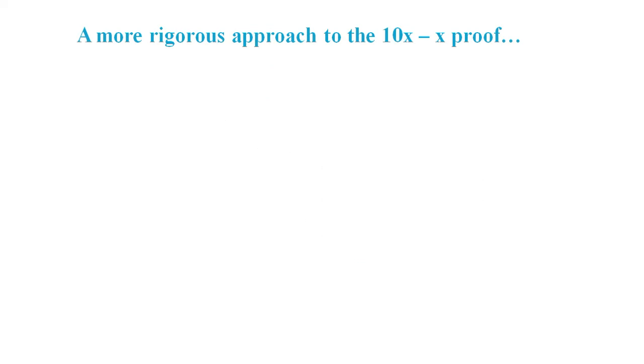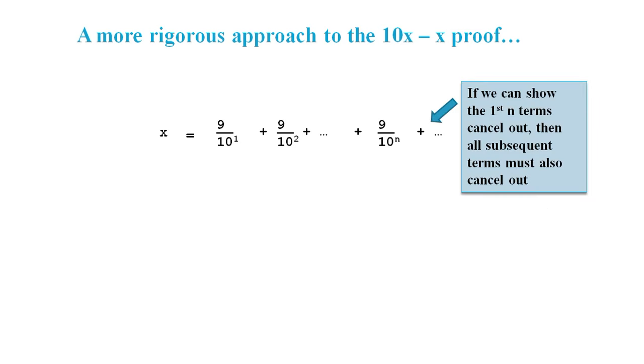And so let's do a more rigorous approach to this proof. We start off by expressing 0.9 recurring as a series up to the nth term. We are assuming that there are an endless number of terms after the nth term—infinitely many if you prefer—but we only need to consider up to the nth term because all of the subsequent terms can be said to have cancelled out if we can show that all terms up to the nth term cancel out.